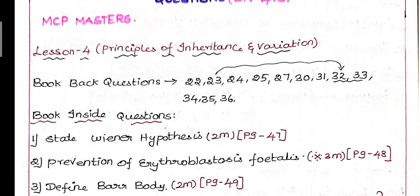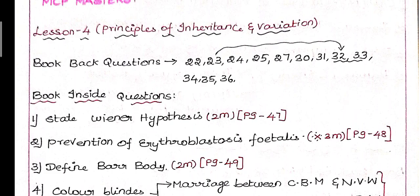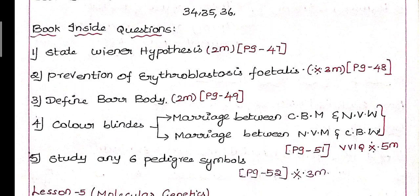Let's start with Lesson 4: Principles of Inheritance and Variation. In this lesson, book back questions to cover are 22, 23, 24, 25, 27, 30, 31, 32, 33, 34, 35, and 36. Questions 32 and 33 have lengthy answers, so focus on the others first.